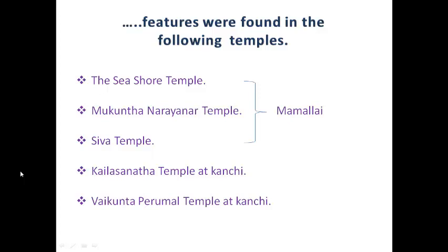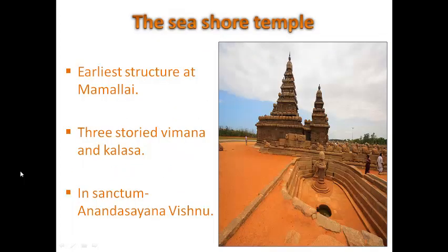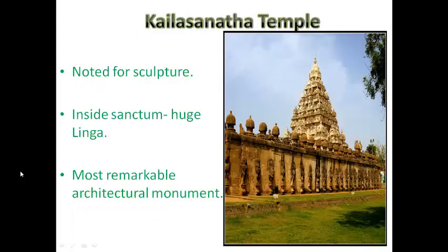Also in the Rajasimha group: Kailasanatha Temple at Kanchi and Vaikuntha Perumal Temple at Kanchi. The Seashore Temple is the earliest of the structural temples found at Mamallapuram, challenging its survival against natural fury. The three-storied Vimana had a Kalasha, and the backside of the temple's sanctum contains Ananthashayana Vishnu. The Kailasanatha Temple and Vaikuntha Perumal Temple are the most perfectly integrated and matured examples of the style, equally noted for their sculptures. Inside the sanctum, a huge linga is found. The Kailasanatha Temple is one of the most remarkable architectural monuments.